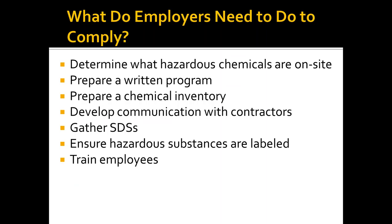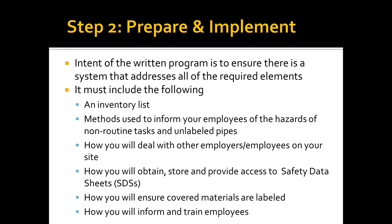What do employers need to do to comply with the standard? You need to determine what you have on site, prepare a written program, do an inventory, communicate with contractors, gather SDSs, ensure containers are labeled, and train employees. Step two is preparing and implementing a written program. OSHA requires written programs because they provide a systematic way to comply with the standard.